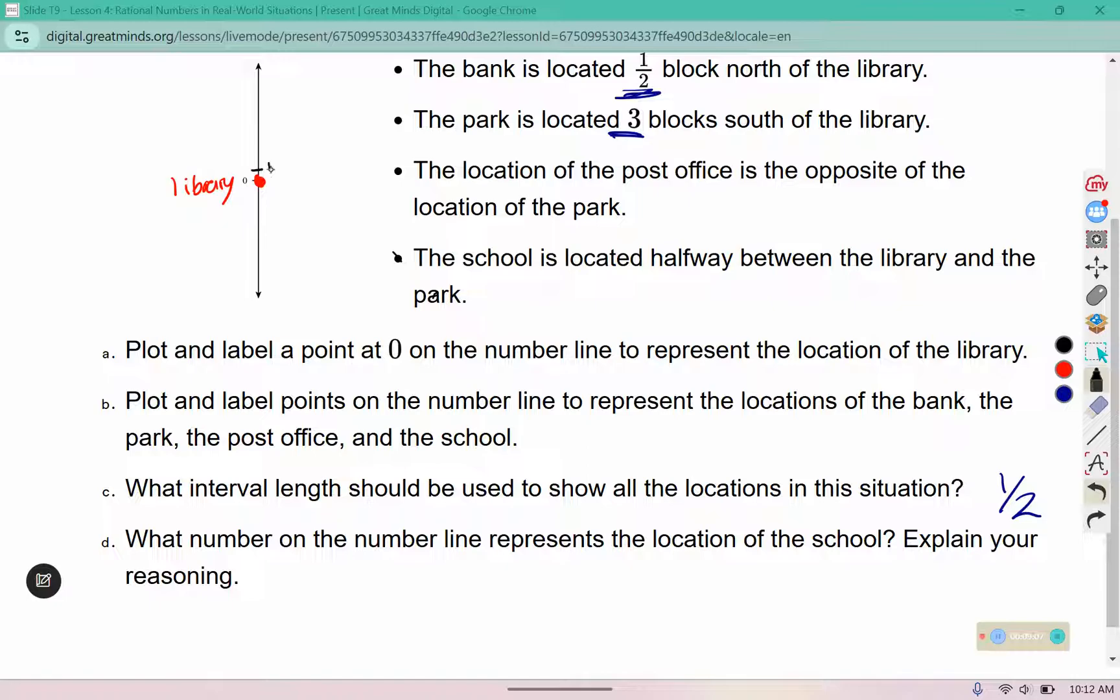This should be one half, one, three halves, two, five halves, three, then down here I have negative one half, negative one, negative three halves, negative two, negative five halves, negative three.